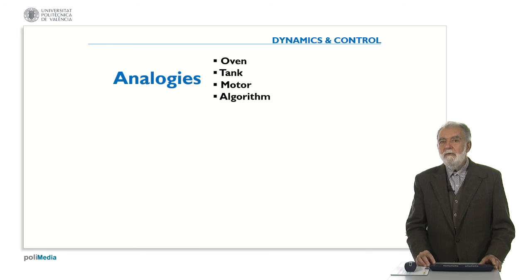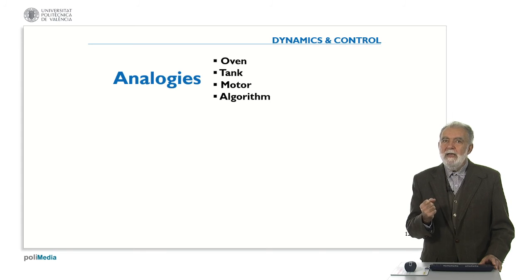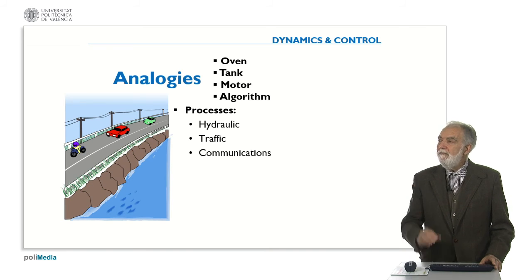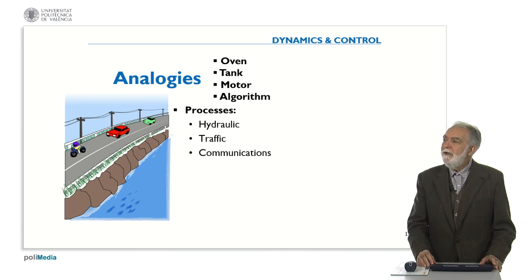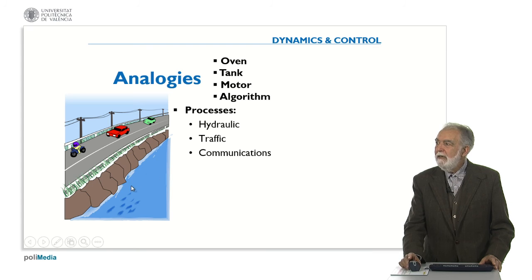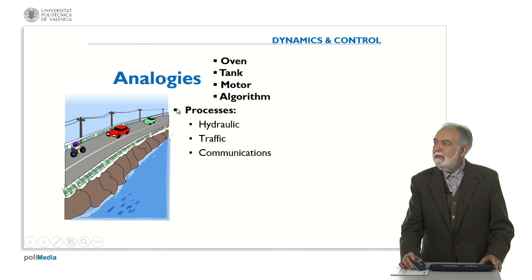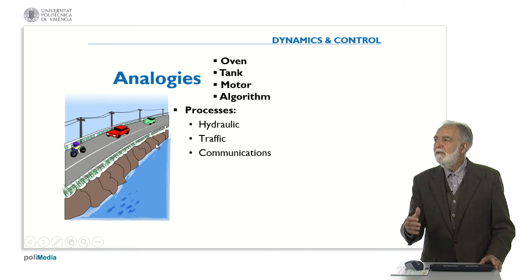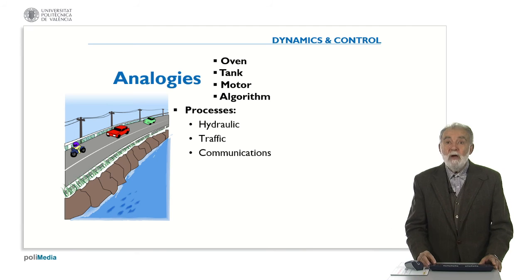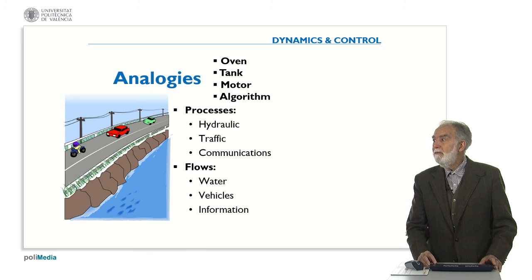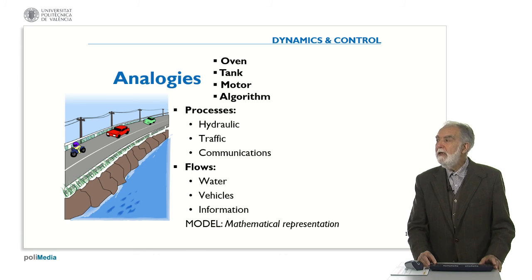So, the idea when we are studying or modeling physical systems is to extract the dynamic behavior and represent it by an algorithm, by an equation, which is very simple. In this figure we can see the river and the water flowing, the cars and the traffic flowing, and the cable with information flowing. Really, these are very different systems, but the behavior of the water, the cars, and the information is similar and can be modeled by the same equation. This covers flows: water, vehicles, and information. The simplest model will be a mathematical representation.